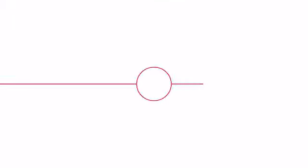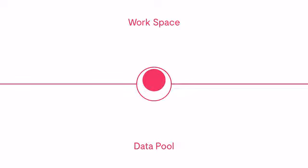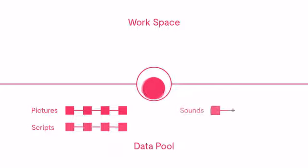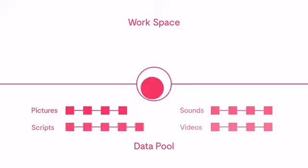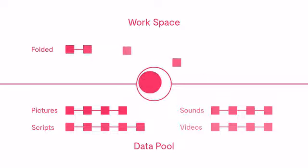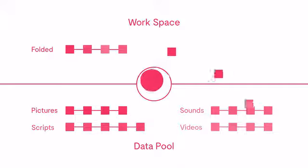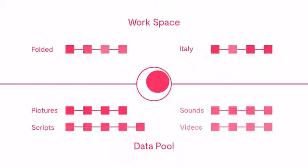O is divided into two areas: data pool and workspace. All of your data is located behind you and sorted on strands according to its file type. New files are threaded on the left. Any object in the data pool can be put together to flexible strands of your choice. These strands are located in your workspace.